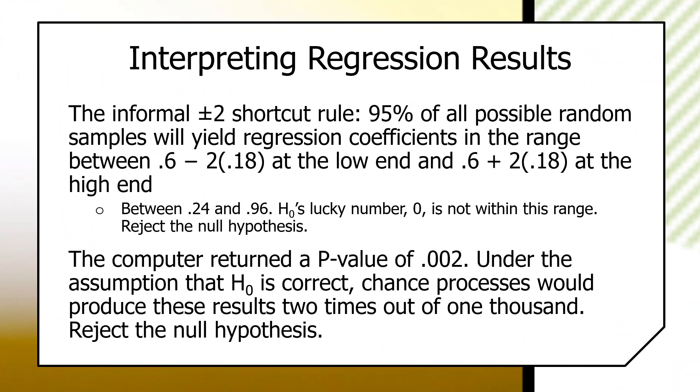H0's lucky number is zero. If the 95% confidence interval included zero, we could not reject H0, the null hypothesis, because the null hypothesis's lucky number is in that interval. But it's not within our range here, so we would reject the null hypothesis.